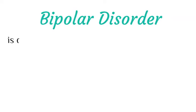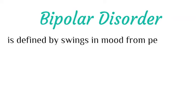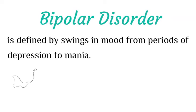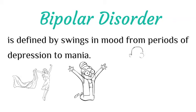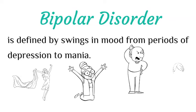Bipolar disorder is defined by swings in mood from periods of depression to mania. Formerly called manic depression, it is a mental health condition that causes extreme mood swings that include emotional highs — mania or hypomania — and lows — depression. When you become depressed, you may feel sad or hopeless and lose interest or pleasure in most activities. When your mood shifts to mania or hypomania, which is less extreme than mania, you may feel euphoric, full of energy, or unusually irritable.